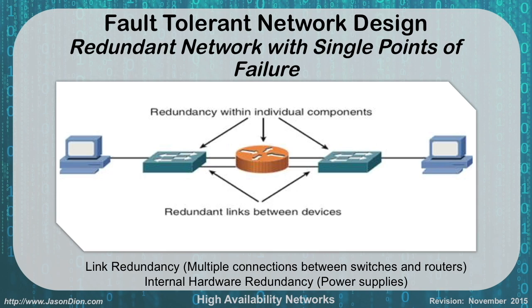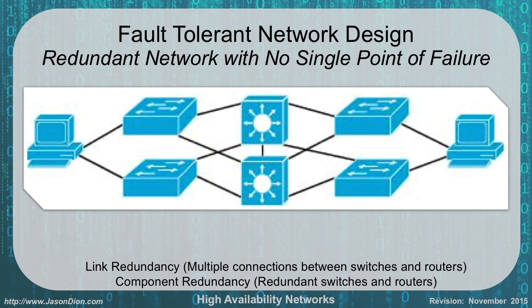The second way is by buying additional hardware, giving us a redundant network with no single points of failure. Notice that if any one switch or any one router goes away, we can still communicate perfectly fine between host one and host two. We have link redundancy between switches and routers, with each switch connecting to both routers. We also have component redundancy — redundant switches and redundant routers — giving us a fully functional network with no single points of failure.